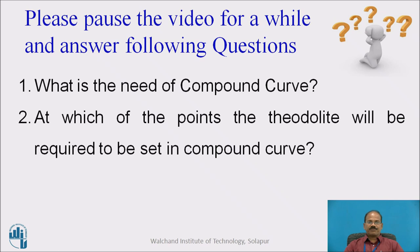The need for the compound curve: when a simple circular curve is inserted and the end point becomes inconvenient because of some geographical difficulties, we have to change the radius of the curve and insert another circular curve of a different radius to shift the tangent point at the opposite end — the second tangent point.